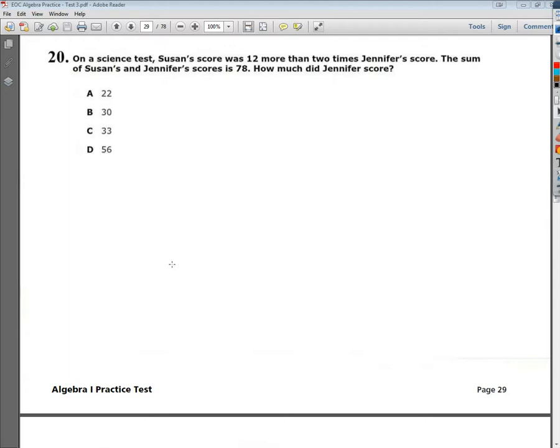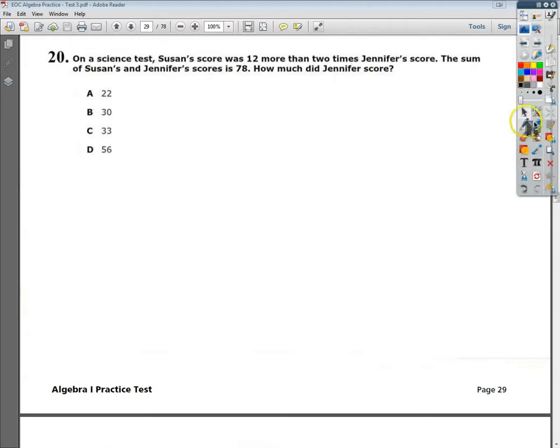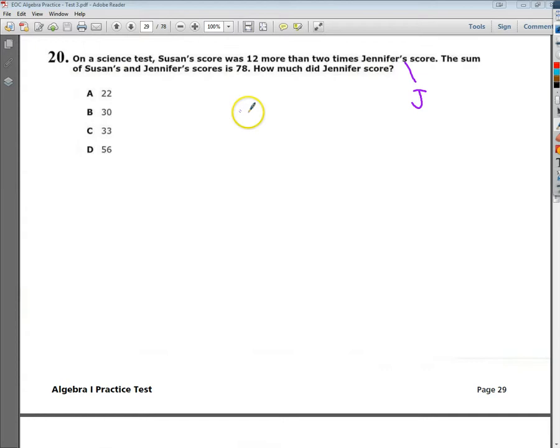Susan's score was 12 more than 2 times Jennifer's score. So I'm going to put a J in for Jennifer's score. And we'll say that Susan's score is represented with an S. So I'm going to say that Susan's score is 12 more than 2 times Jennifer's score. So 2 times J plus 12 more is what Susan's score happens to be.